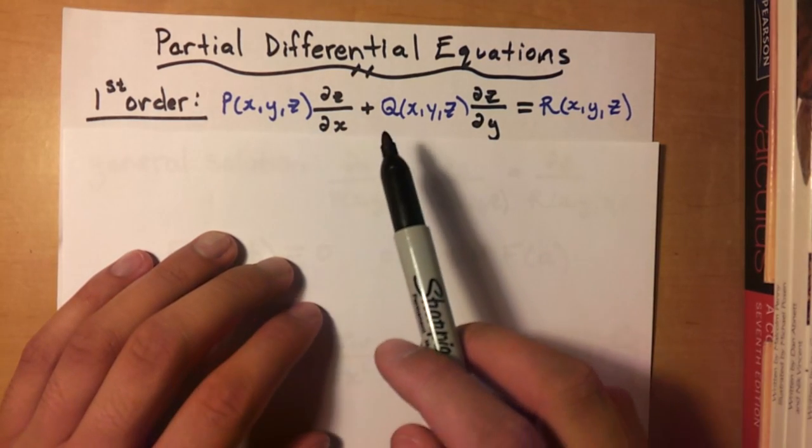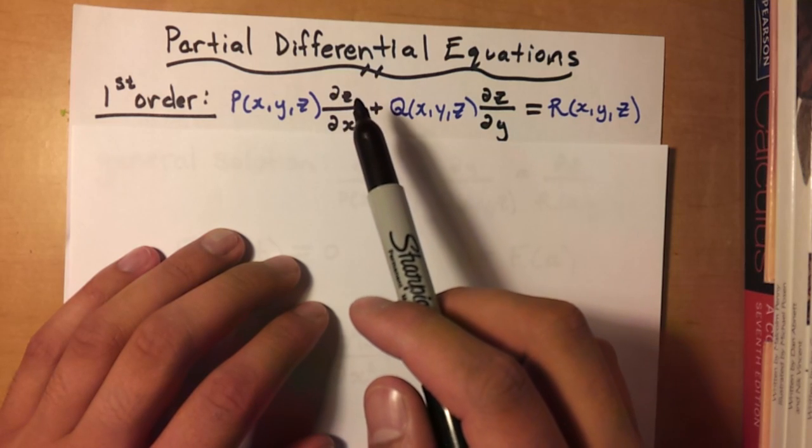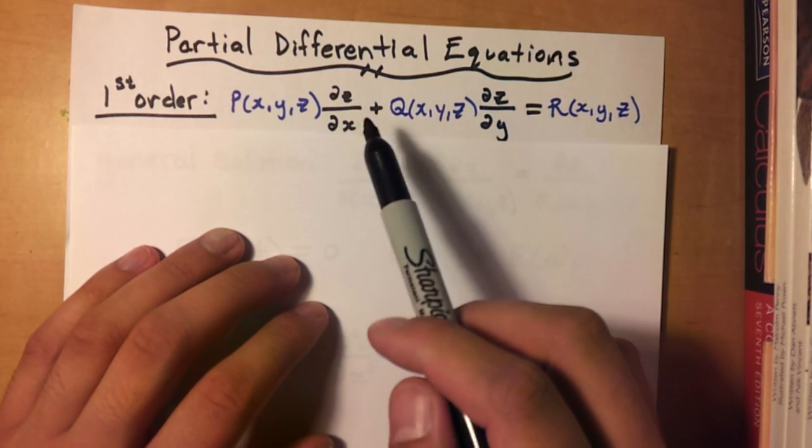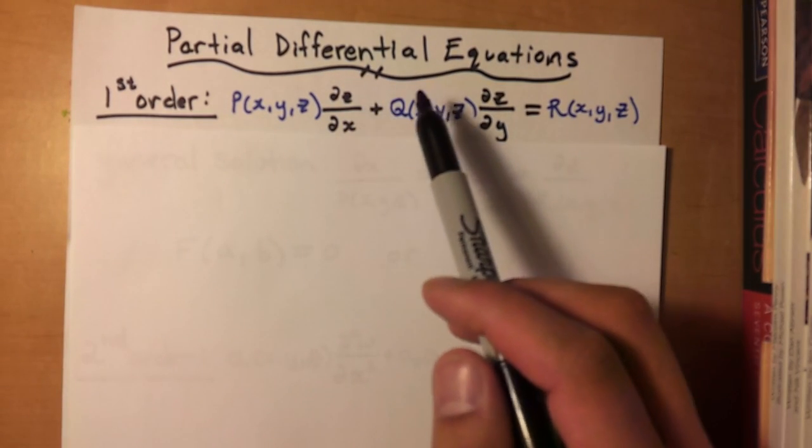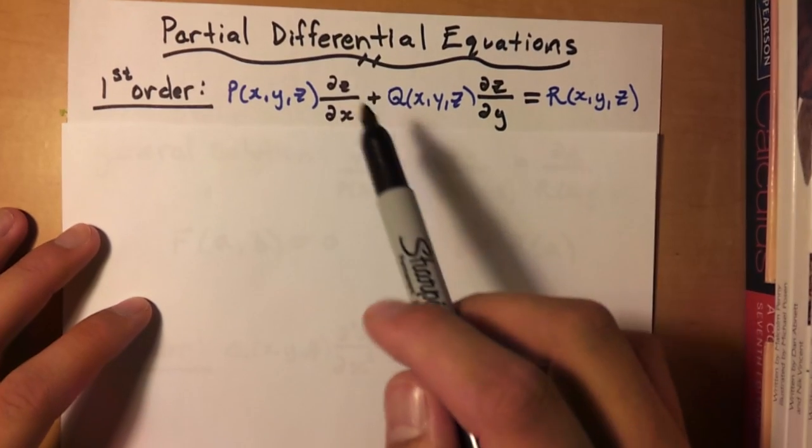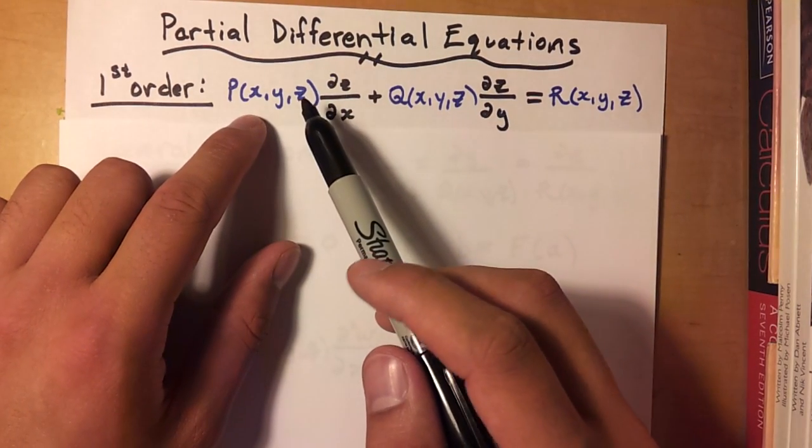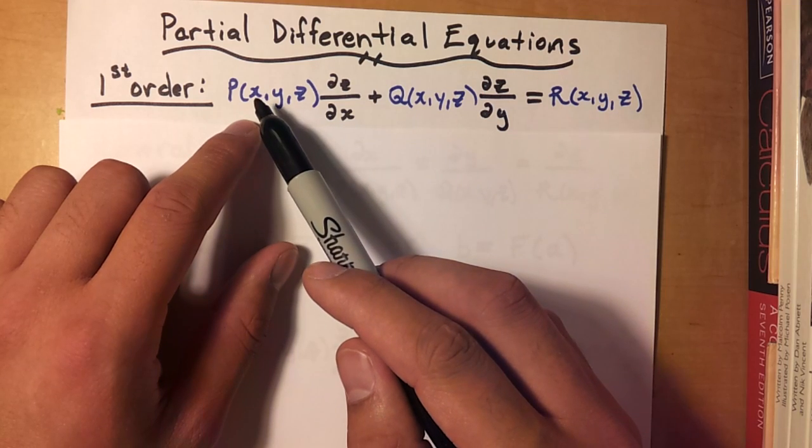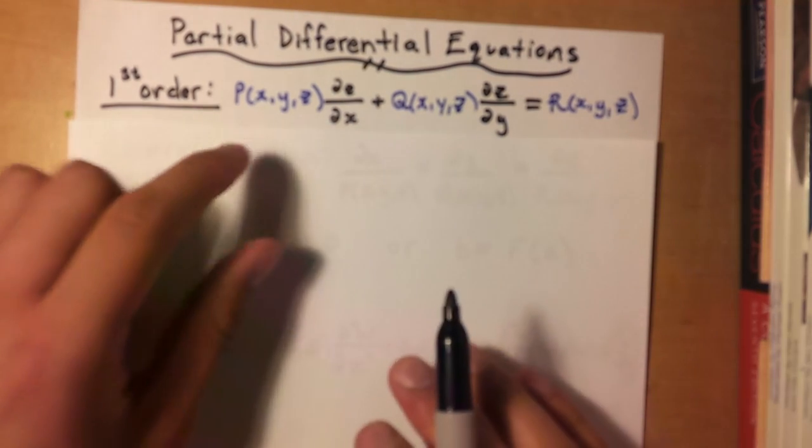So for this partial differential equation, we have three variables. You'll always find three variables, at least for first order. Actually, sometimes you might find two. It depends. But anyway, what you'll notice here is we have P, Q, and R, and that's the things you need to keep in mind while we're dealing with this type of problem.